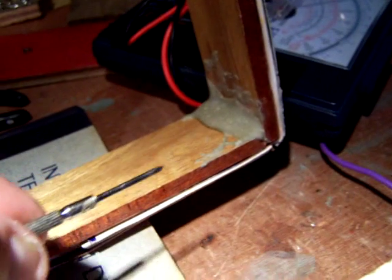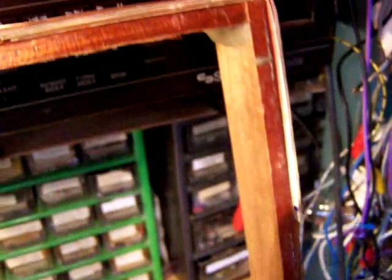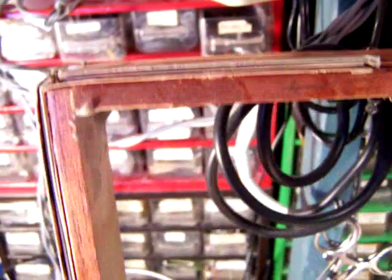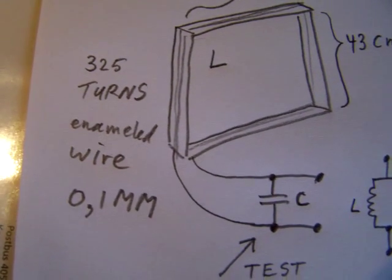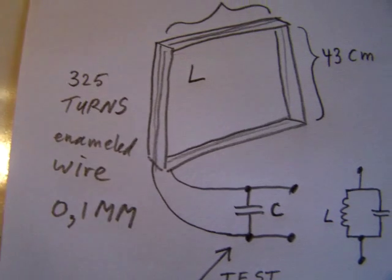Here you see how I've built the first stage of this coil. This is the coil here. It's made from wood. It's 43 centimeters on all sides and I wound wire, enamel wire of 0.1 millimeter.